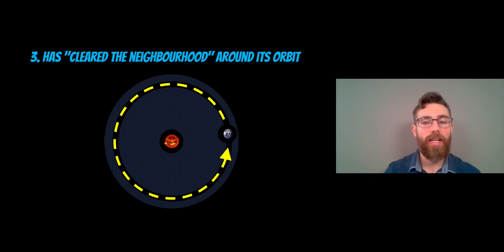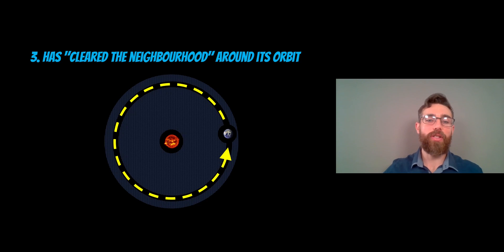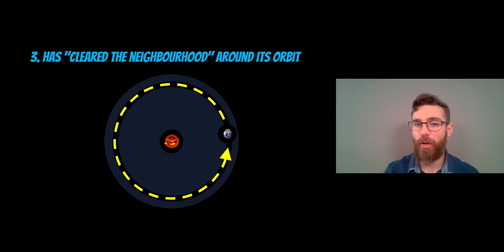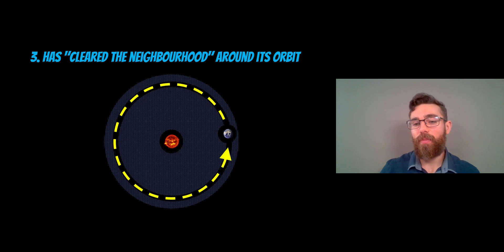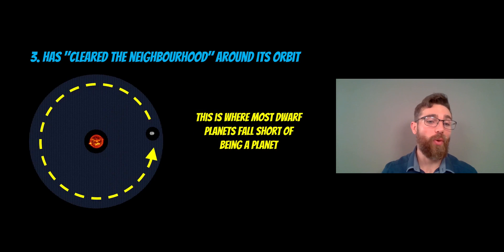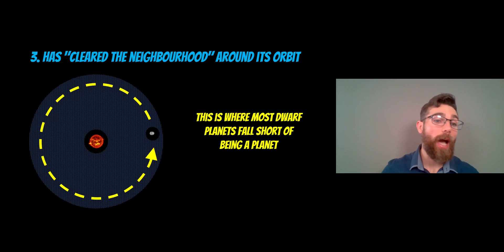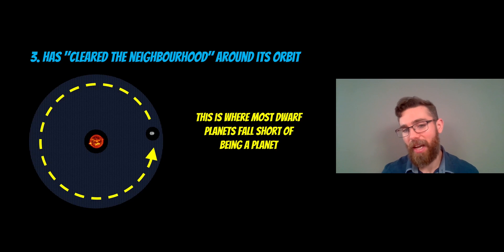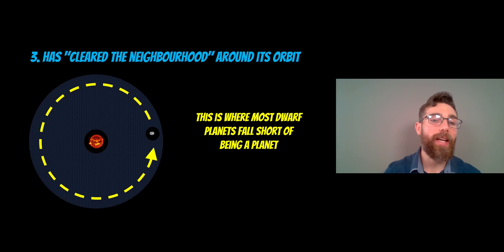The third criterion is that it has to clear out its neighbourhood around its orbit. If you placed a planet among lots of smaller objects, the gravitational attraction from that planet would create a clear lane in its orbit — it would clear out its local neighbourhood, leaving a gap all the way around where the planet orbited. This is mostly where dwarf planets fall short. For example, dwarf planets in the asteroid belt and in the Kuiper belt don't clear out a gap all the way around. They don't have enough mass to clear their neighbourhood. Yes, they can orbit the Sun and have a spherical shape, but they're just not quite big enough to locally clear out their neighbourhood of other objects.